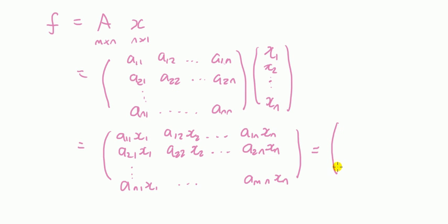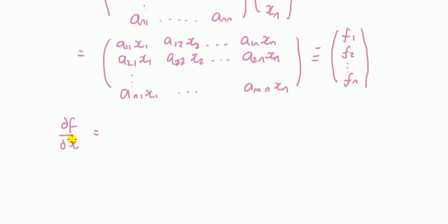Each row, let's just shorten this thing. Let's call the top row f1, f2. You can see that each row is a function of the n independent variables x. Now I want df by dx.